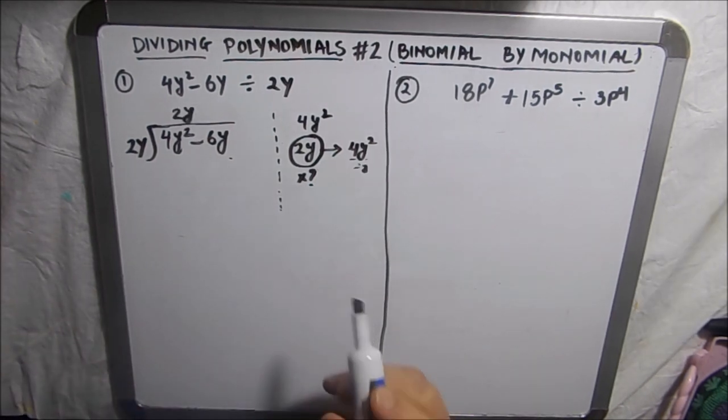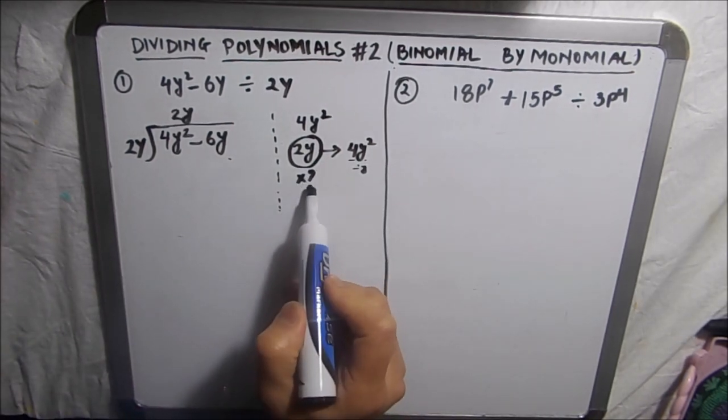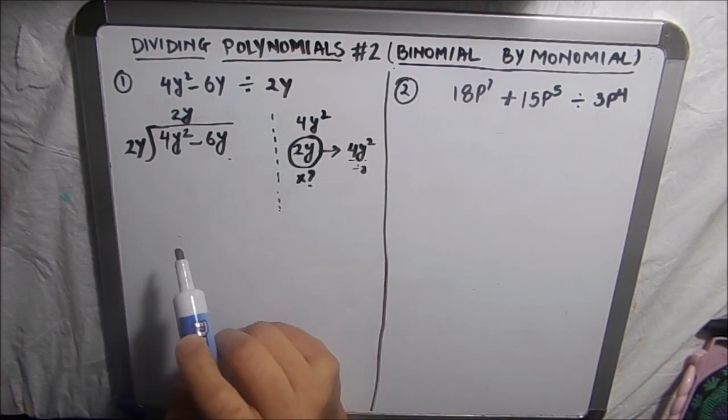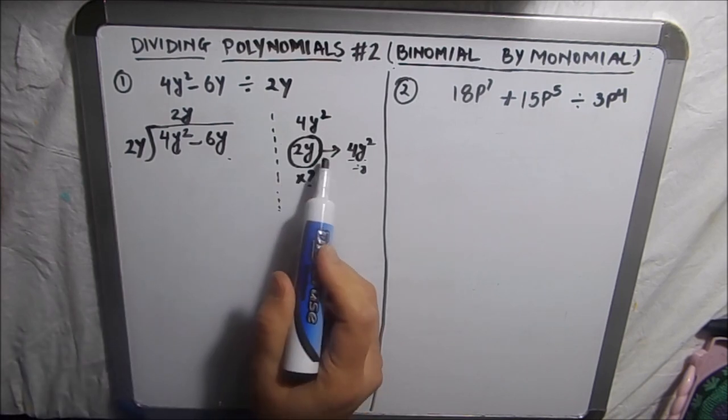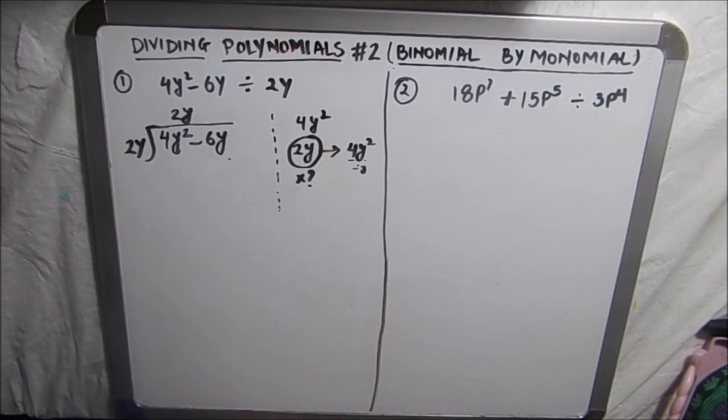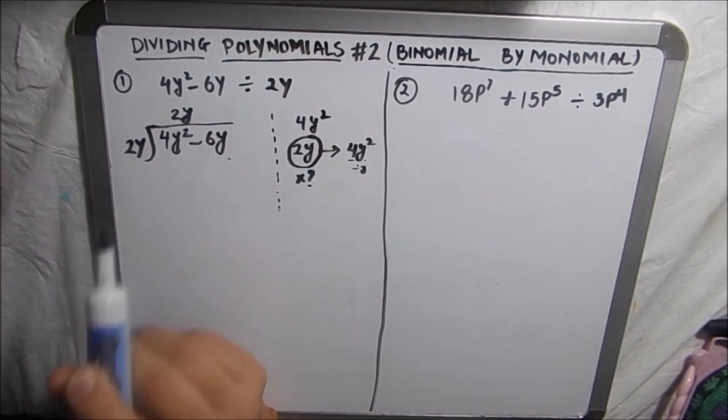Our aim here is to find a number which we multiply to 2y, our divisor, so that we get the first term. Here, since these are small numbers, we can say that 2y times 2y is 4y². So our quotient is 2y here.